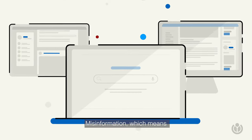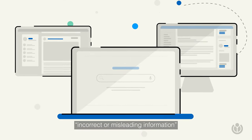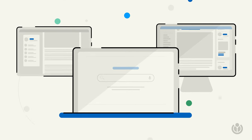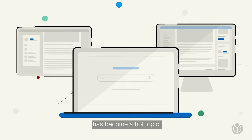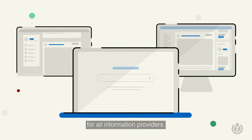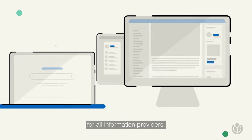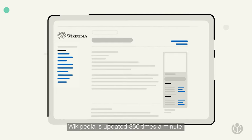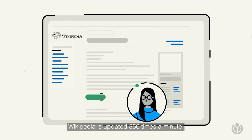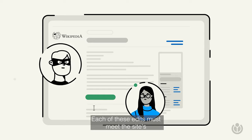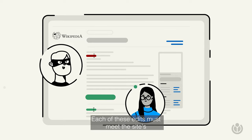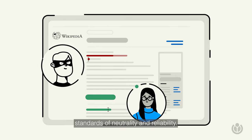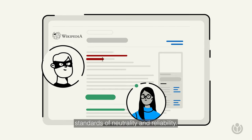Misinformation, which means incorrect or misleading information, has become a hot topic for all information providers. Wikipedia is updated 350 times a minute, and each of these edits must meet the site's standards of neutrality and reliability.